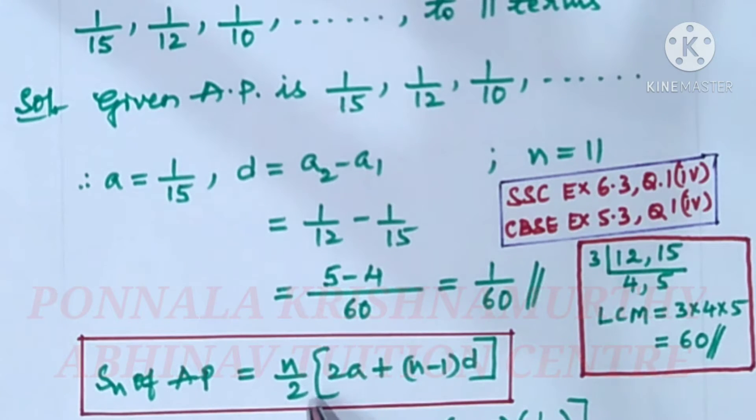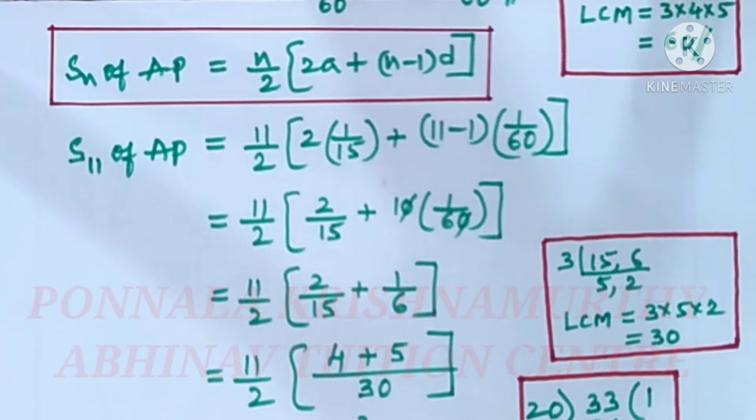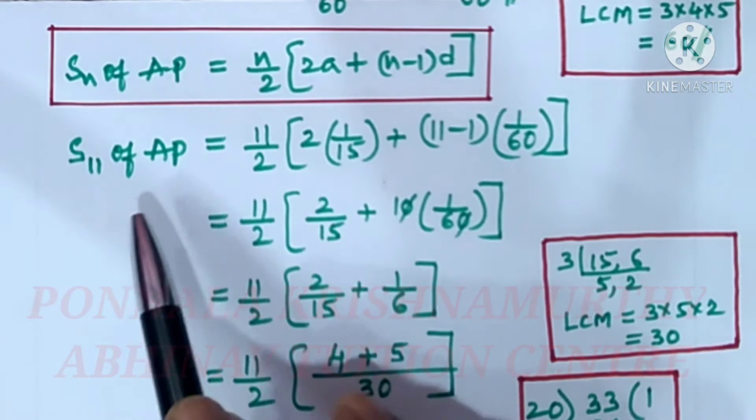S_n of AP equals n/2 times [2A plus (n-1)D] is the formula. Since n equals 11 here...